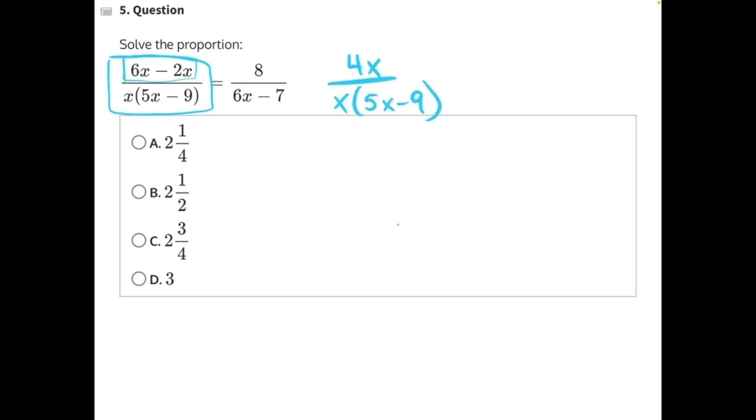And then we can factor out a greatest common factor from the numerator and denominator of x. So when we factor that out, these cancel, leaving us with 4 over 5x minus 9. And at this point, we can begin to cross multiply.